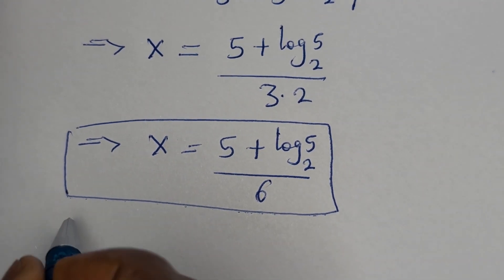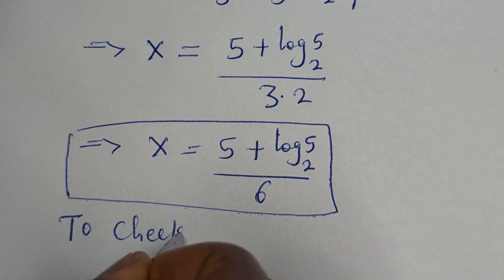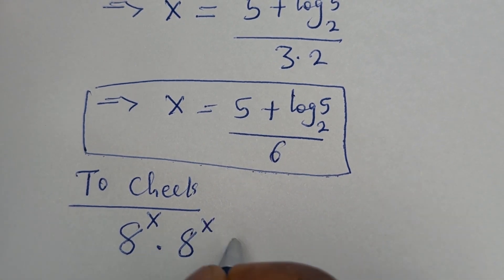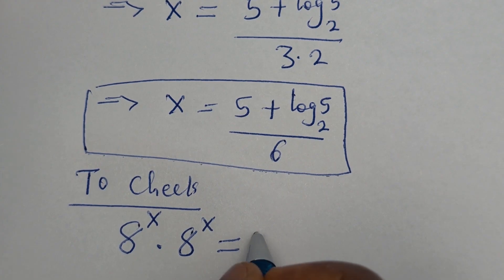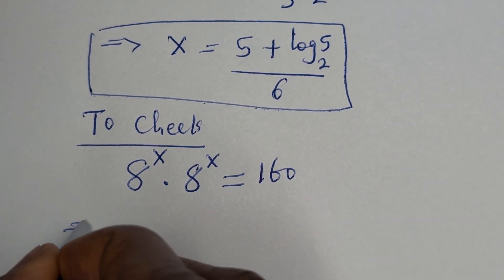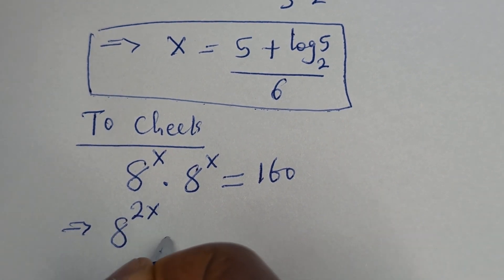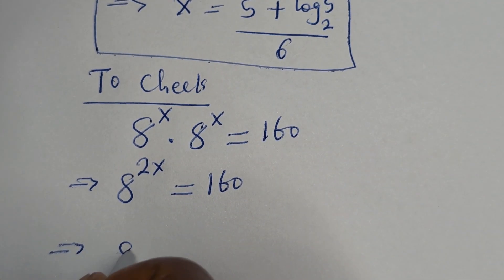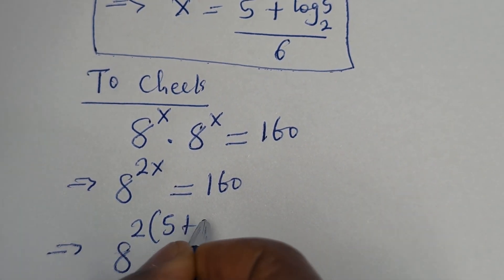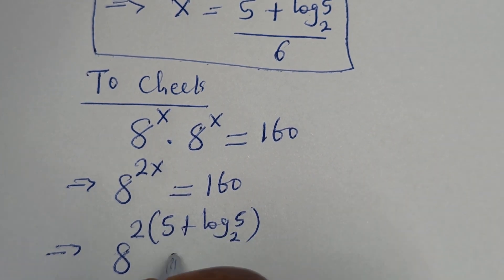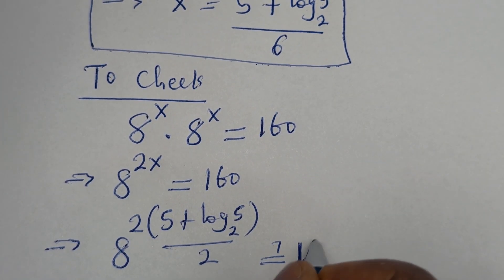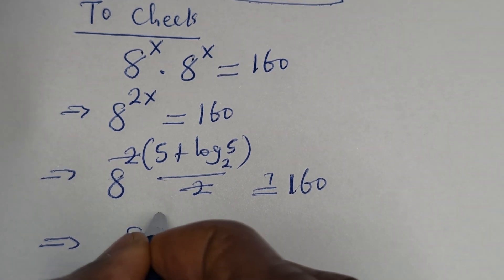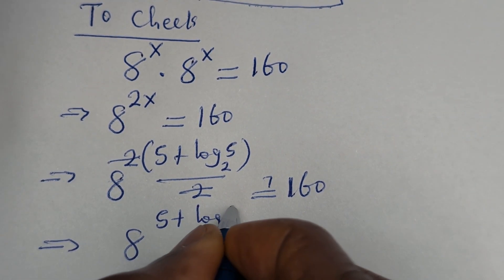We may check to confirm if this answer is right or wrong. We have the given equation: 8 raised to power x multiplied by 8 raised to power x is equal to 160. This is the same thing as 8 raised to the power 2s is equal to 160. When x is equal to 5 plus log 5 base 2 divided by 6, then 8 raised to the power 2 times (5 plus log 5 base 2) divided by 6 must be equal to 160.